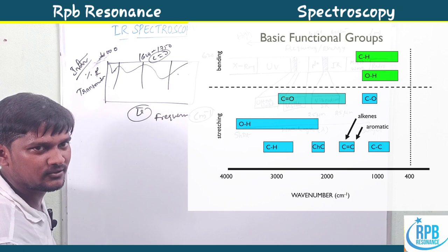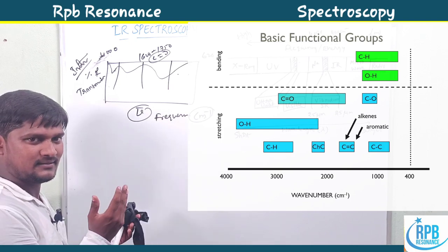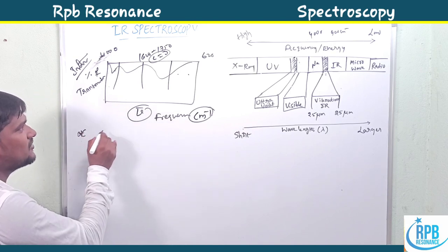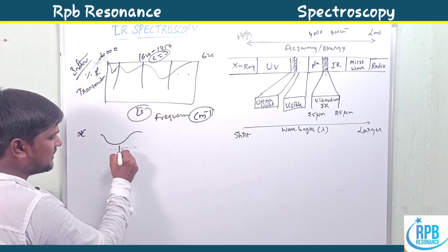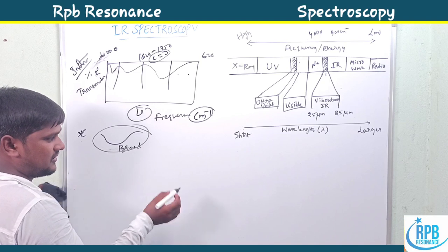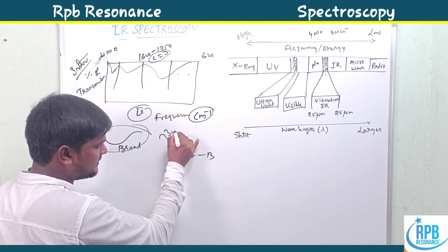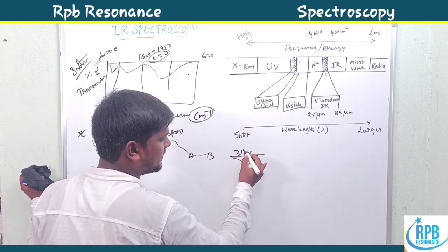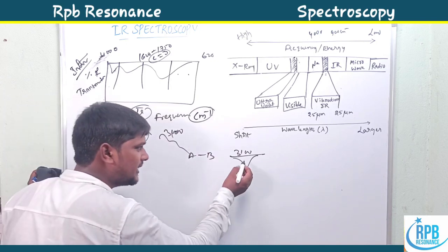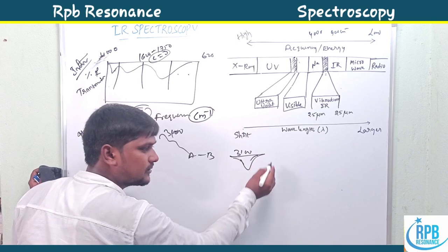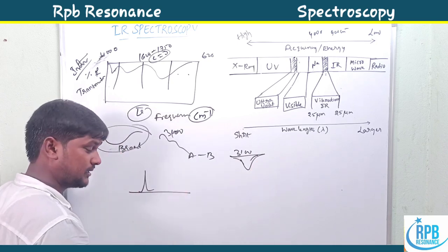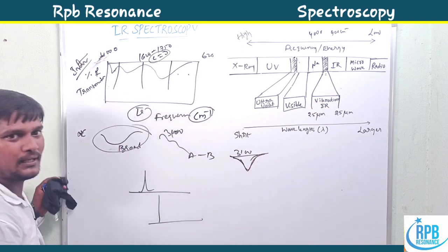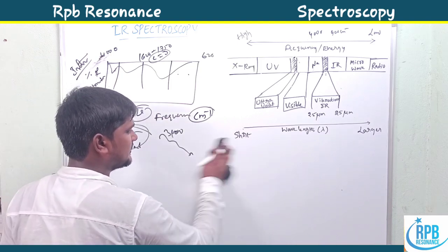I'll show some basic functional group ranges. Another question is: why do the peaks appear very broad? Simply, the molecule absorbs a certain wavelength, say 3100 cm⁻¹, and emits that same range — they both match, which is resonance. In NMR spectroscopy peaks are sharp, and in mass spectrometry there are single sharp lines, but in IR spectroscopy the peaks are broad. Let's discuss the reason behind the broad peaks.